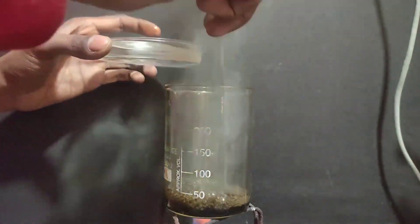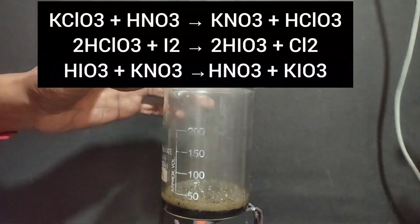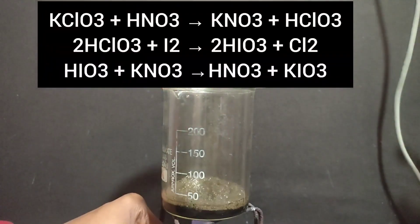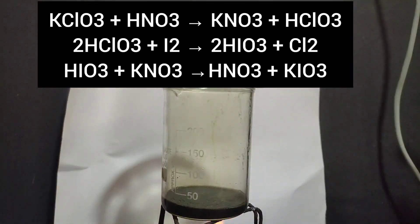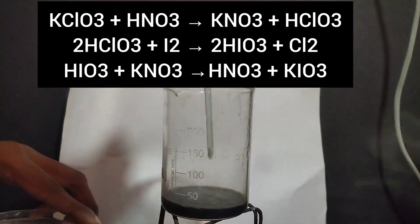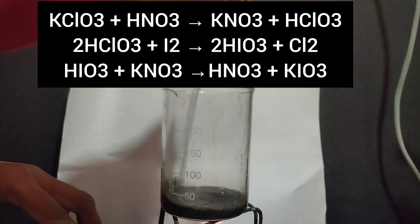But after some time, instead of iodine vapor, greenish yellow chlorine gas started evolving. Iodine reacts with potassium chlorate in presence of an acid to form potassium iodate and chlorine gas. This is because iodine has more affinity towards oxygen than chlorine. The reaction was carried out until no more greenish yellow gas was evolved and solution turned clear.